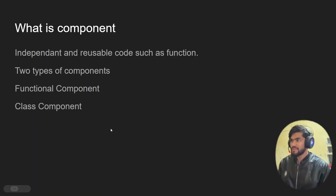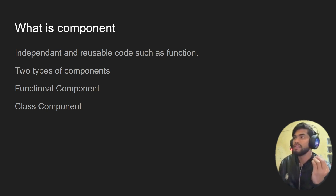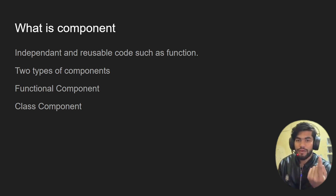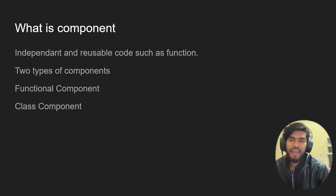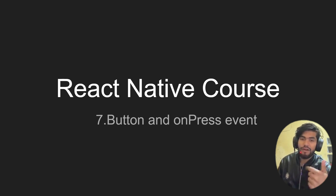Going back to our slides: components are independent and reusable code, much like functions, and we can write JSX code inside them. Components are of two types: functional components and class components. Initially when React launched, class components were used, but they were not good for managing state, so functional components were introduced. We also covered default export and named export.